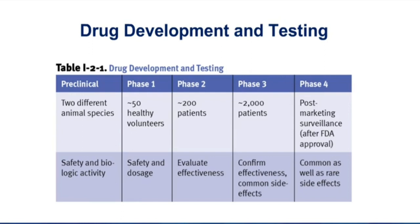Importantly, the purpose of phase four trials is to determine common side effects — really confirming some of those we might have seen in phase three — but also to discover rare side effects. This is when side effects that occur in one in 10,000 or one in 100,000 patients are discovered, because this is the only time we're getting a large enough sample size to detect those rare side effects. It's why some people advocate that you should wait at least three to five years after a drug goes onto the market before you begin prescribing it to your patients.